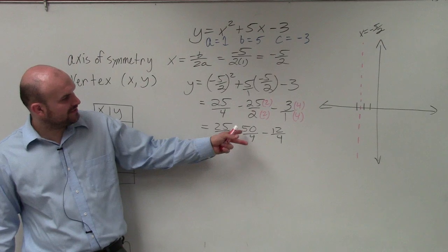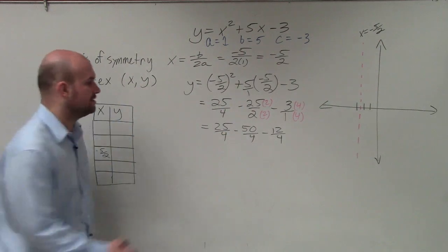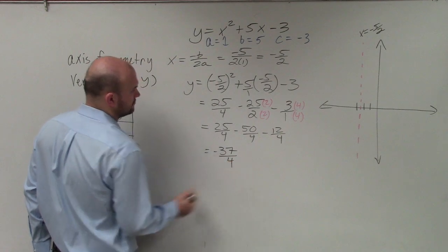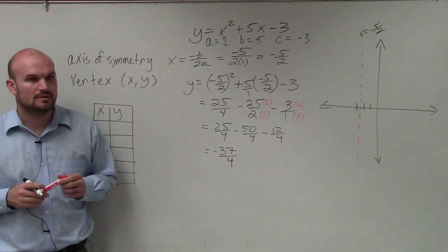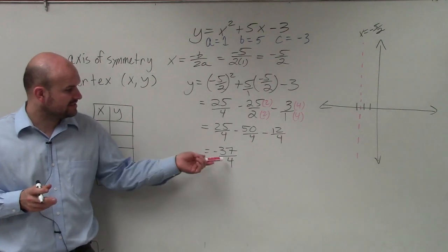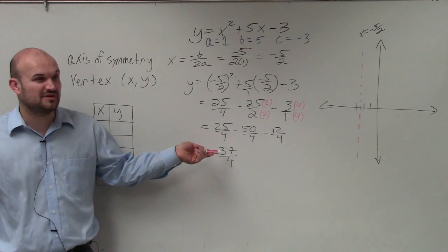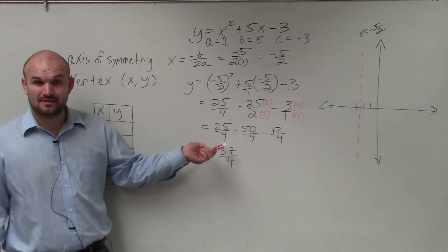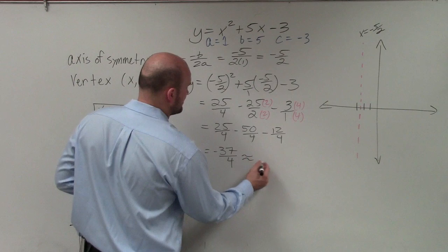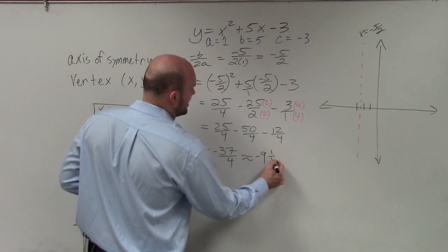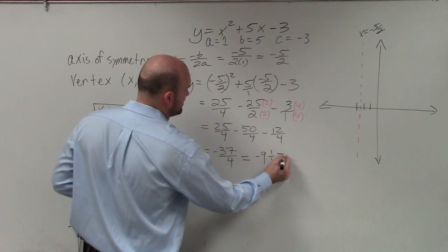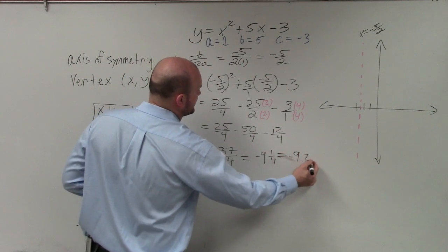So you have negative 25. So I'm getting negative 37 over 4. And if anybody did that, you could see that 4 divides into negative 37 nine times with 1 as a remainder. So you could also rewrite this as a mixed number of negative 9 and 1 fourth, which is also equal to the decimal approximation of negative 9.25.